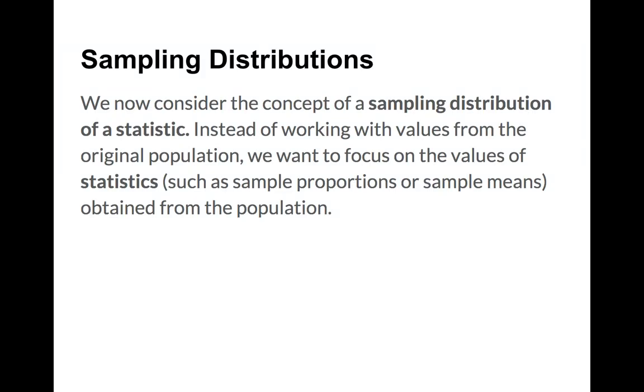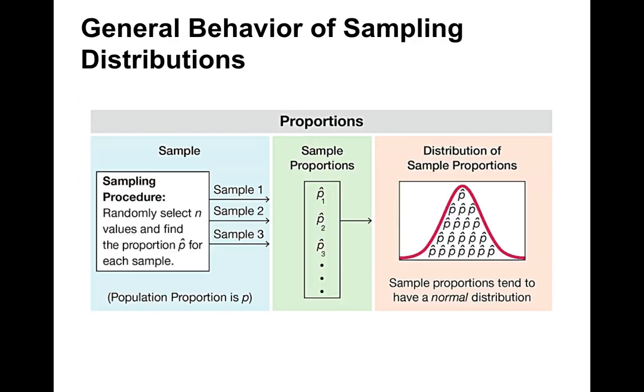Now let's talk about sampling distributions. A sampling distribution of a statistic — always a statistic since it's from a sample — focuses on statistics based on a sample rather than individual population values. The two we typically talk about are sample proportions and sample means. Let's look at their general behaviors.